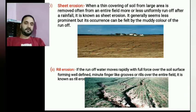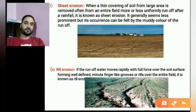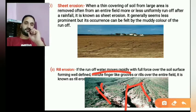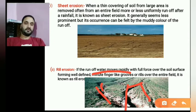The second type is rill erosion. When rapidly moving water creates small, finger-like grooves on the soil surface, this is called rill erosion. When these rills become deeper and larger, we call it gully erosion.